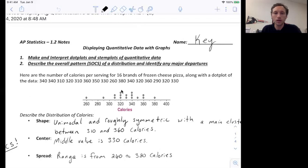Then you simply put a dot for each pizza. So 340, we would put a dot above 340. And you can see there's another 340. That's why there's a second dot. And there's another 340. That's why there is the third dot. So making a dot plot is quite simple.